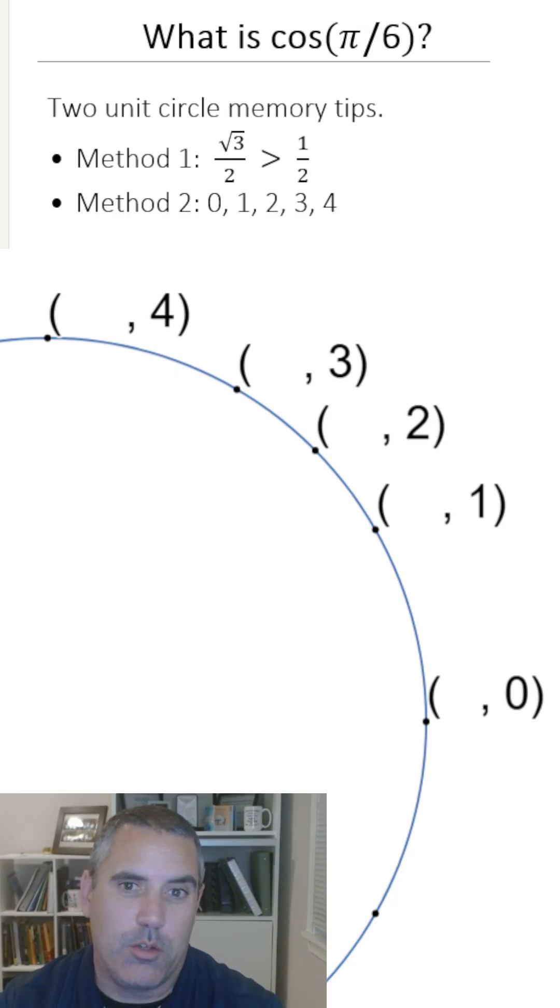After you've done 0, 1, 2, 3, 4, then you go back. 0, 1, 2, 3, 4 on the way down. So let's do that.